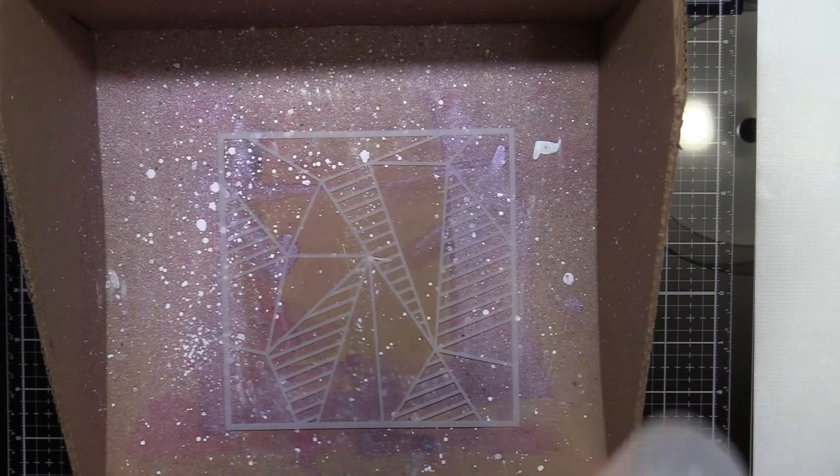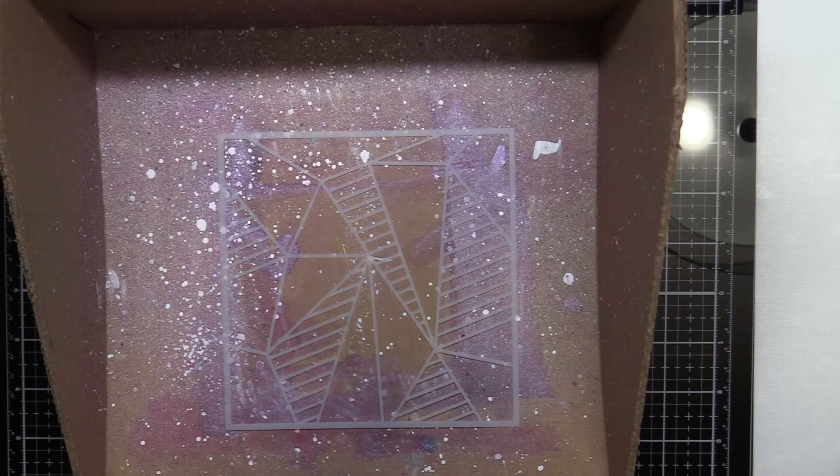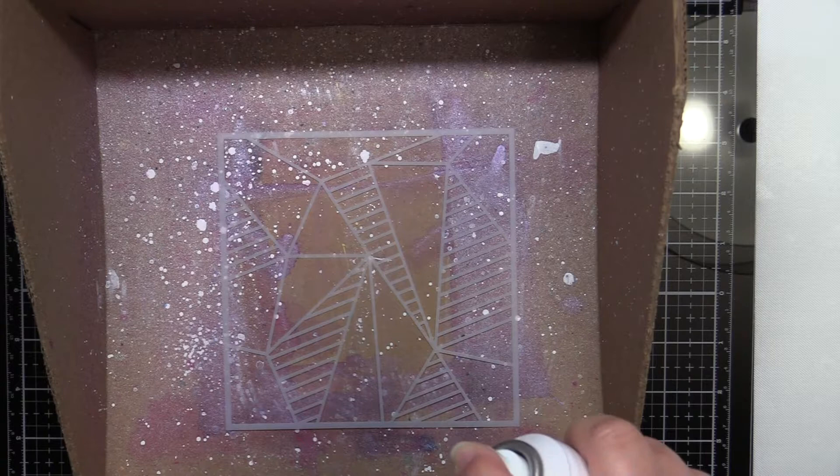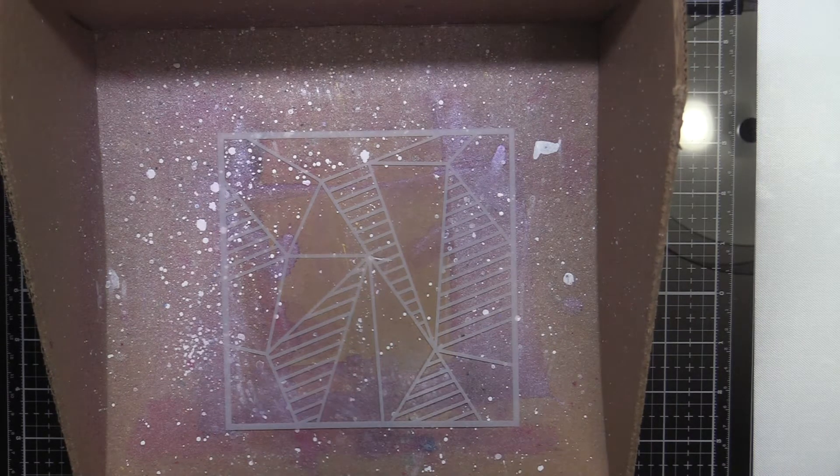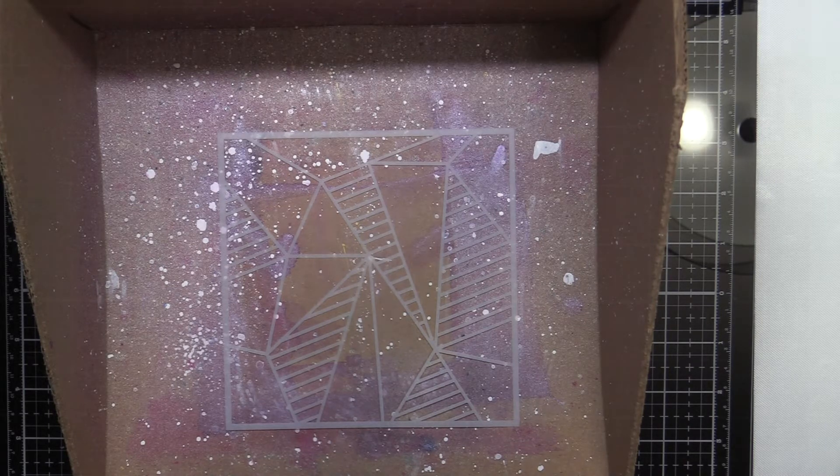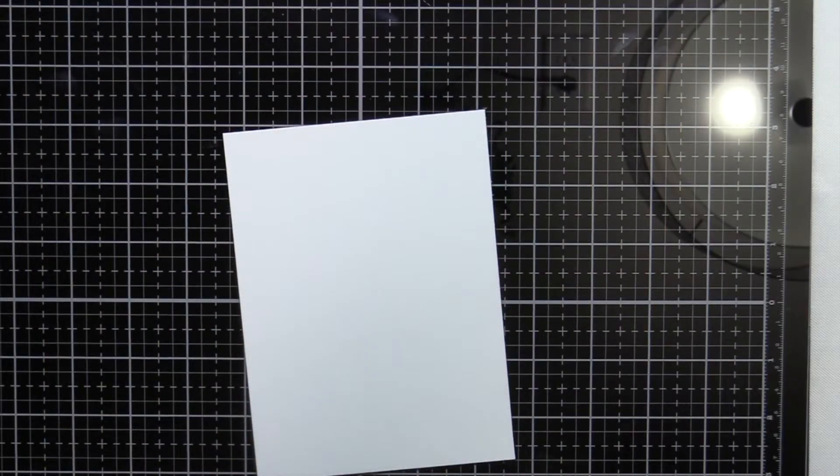First I placed the faceted stripe stencil in my overspray box and spritzed it lightly with Thermoweb Pixie Spray. You'll want to shake the can vigorously before use, just as if you were using spray paint, and apply a thin layer to your stencil. A little goes a long way.